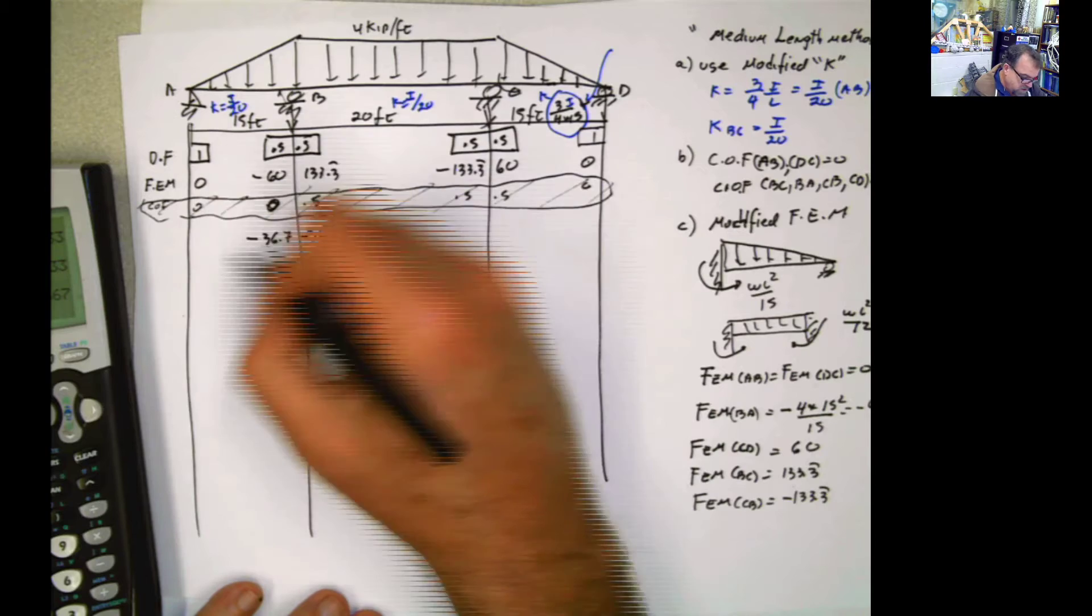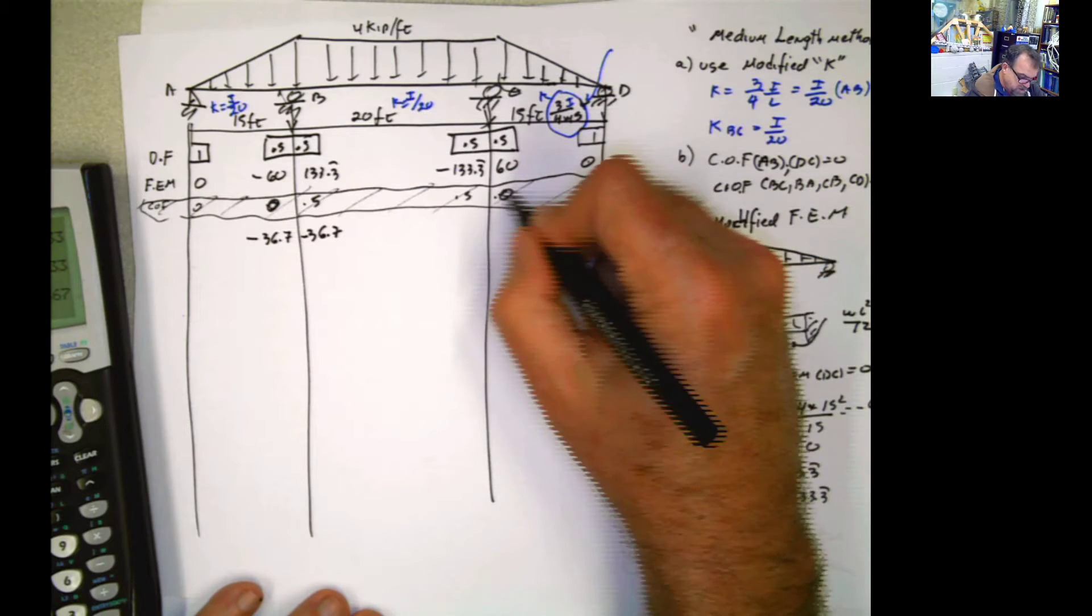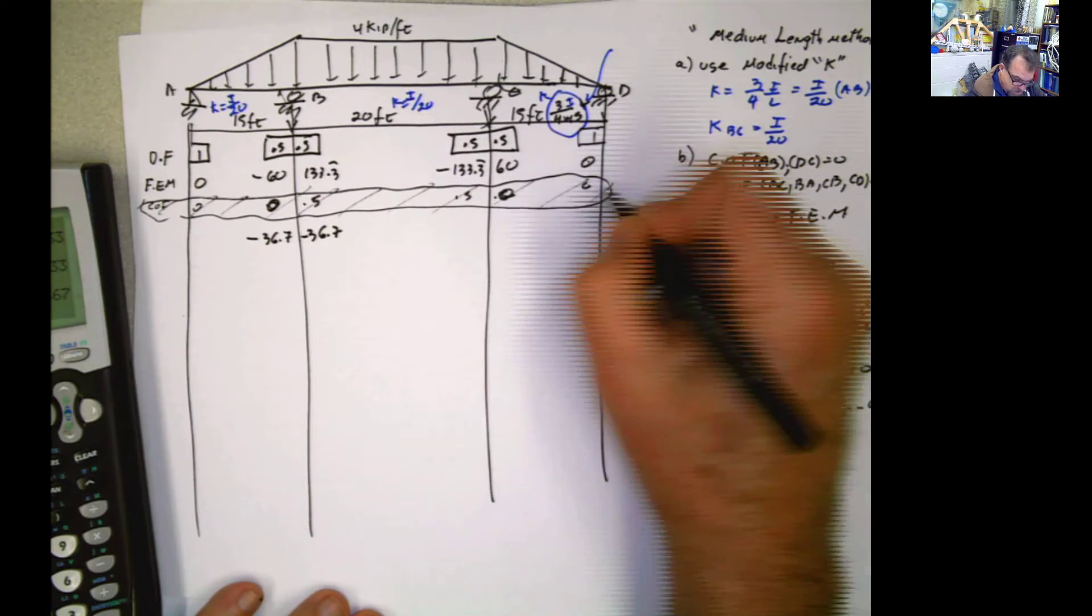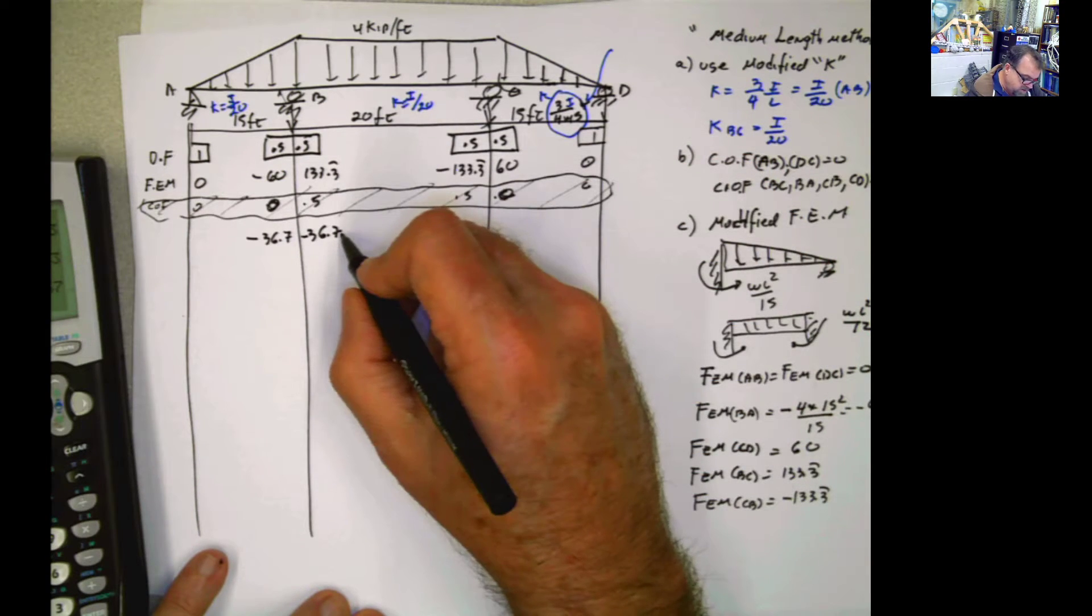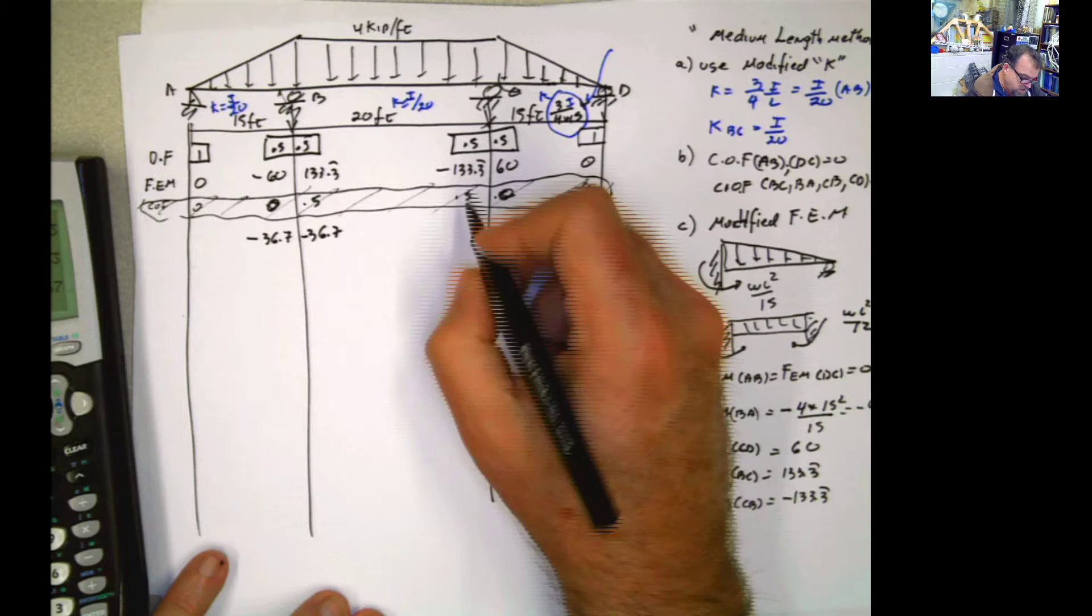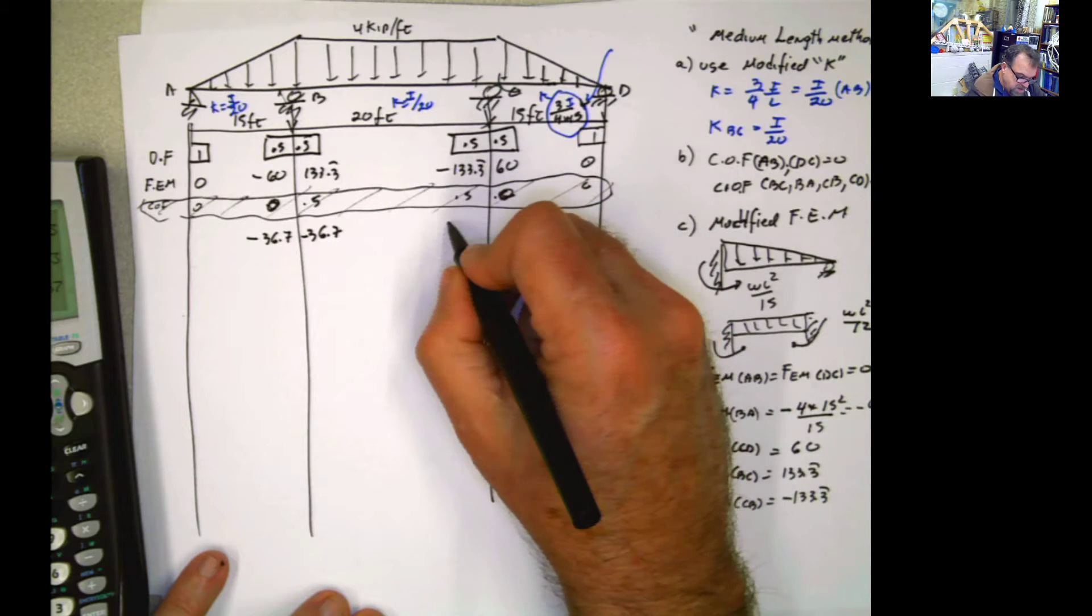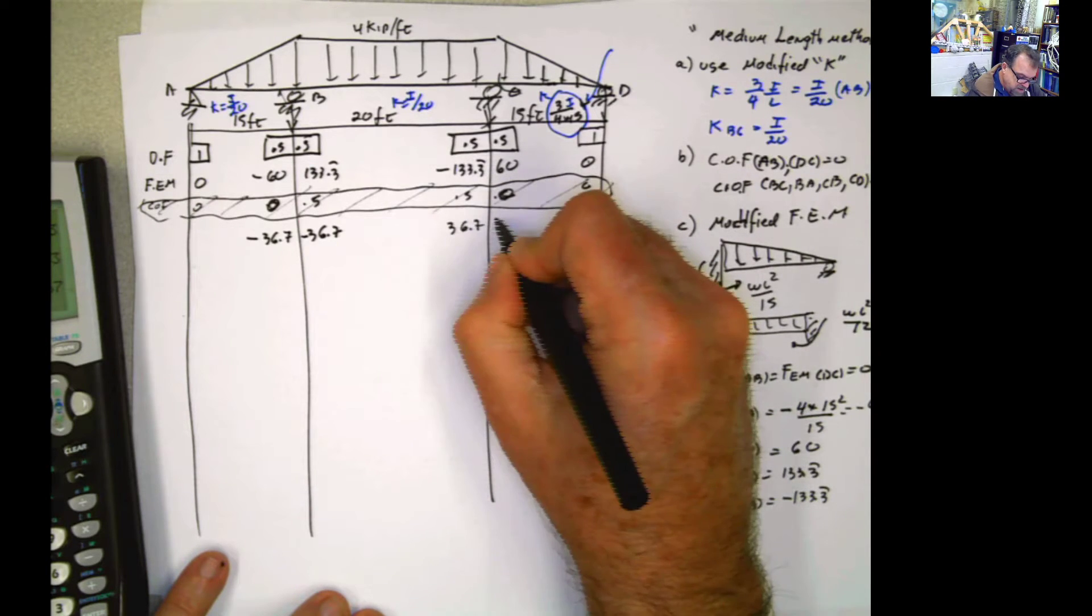This is 0, by the way, here, because this is not transmitting anything to that part. And this part to the far end is 0. It's not transmitting anything there. That's what I meant by that. But this is transferring something to here. So the unbalancing of this is the same thing, 36.7 and 36.7.